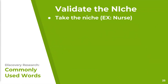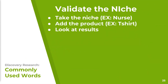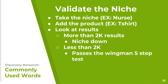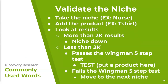When validating a niche, we take the niche — for example, nurse — add the product, which in this case is t-shirts, then look at the results. We like to compete with fewer than 2,000 results. If there are more than 2,000 results, we suggest niching down to find less competition. If there are fewer than 2,000 results, we run the Wingman five-step test. If it passes, we test and put a product there. If it doesn't pass, we move on to another niche or try a different product type.